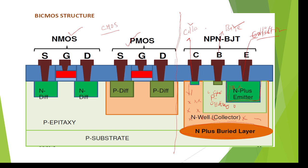So emitter, base, and collector terminals are designed using the same P-substrate. On the left side, CMOS transistors — NMOS and PMOS — are designed, and on the right side, bipolar technology transistors are designed. This combination is called the BiCMOS fabrication process.